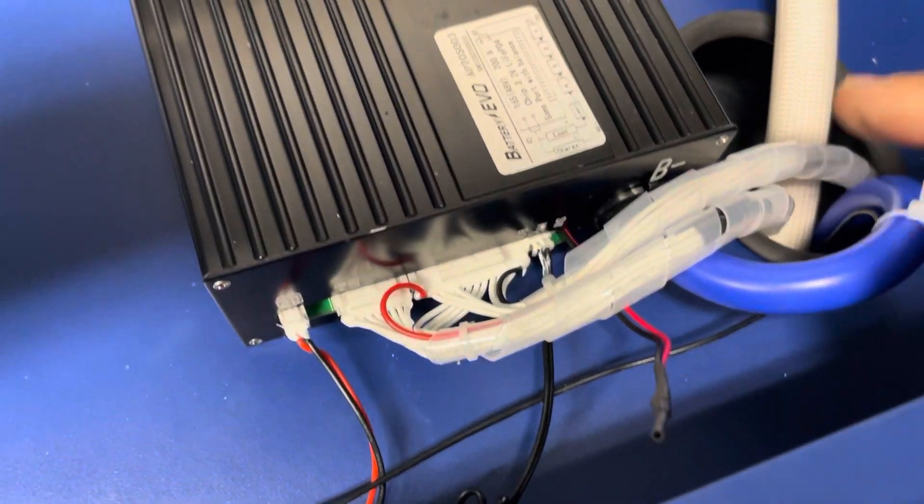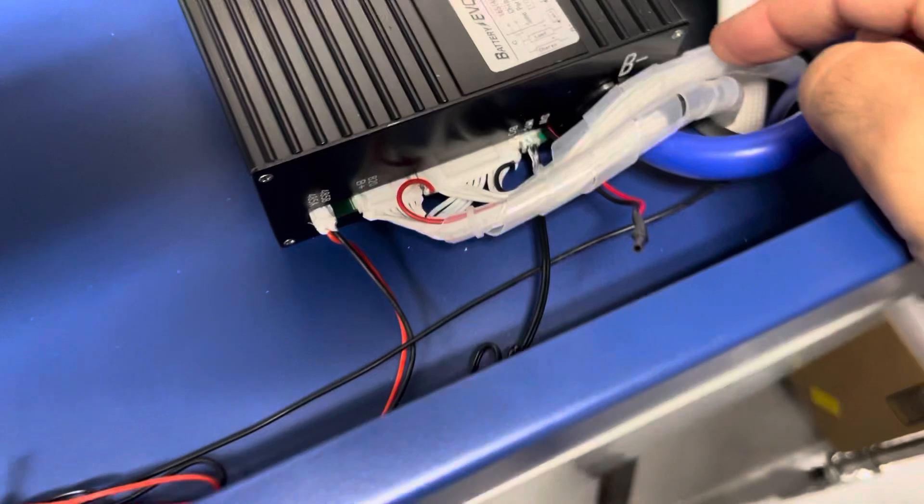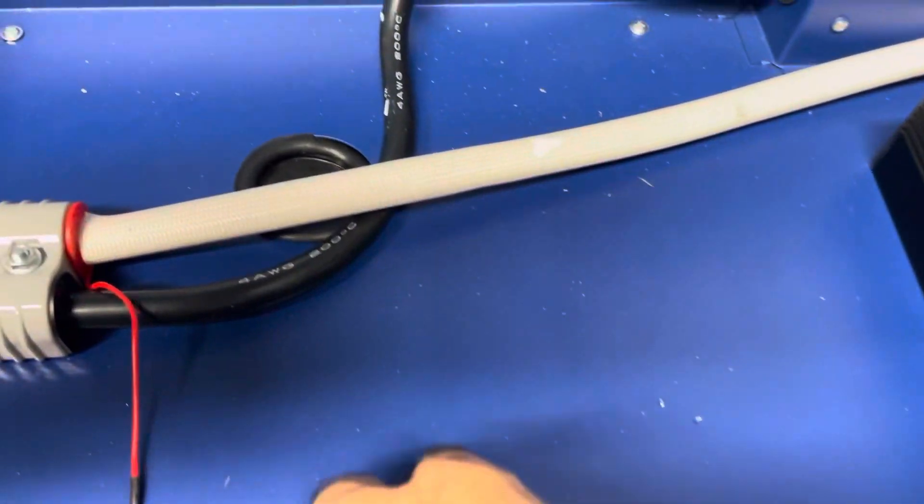There's some kind of potting. This must be the antenna for the Bluetooth. These are the sense leads.